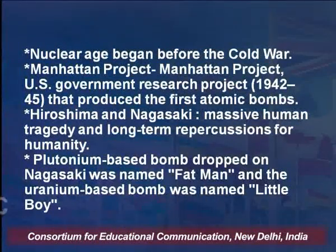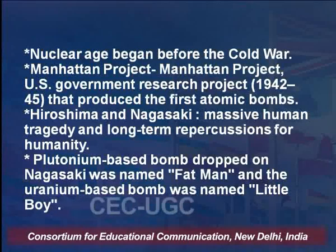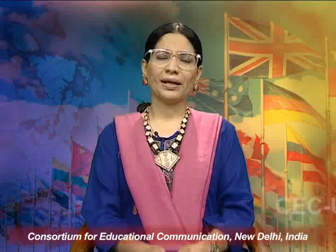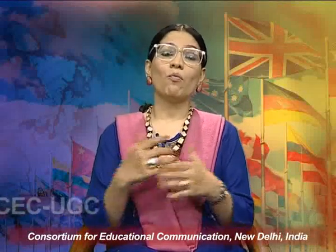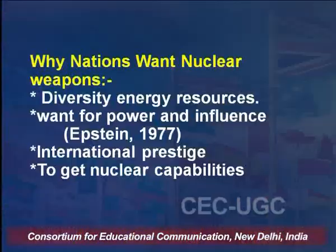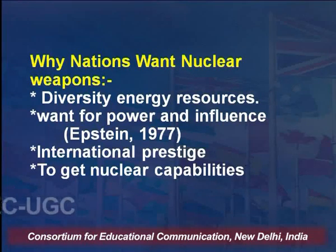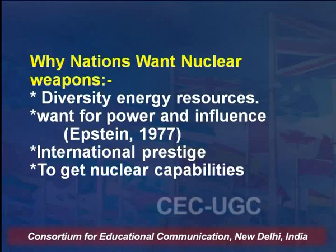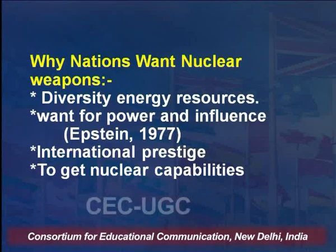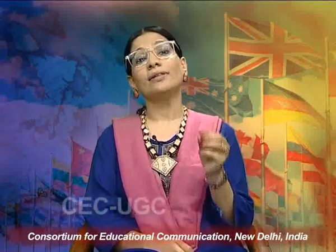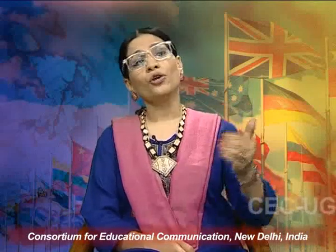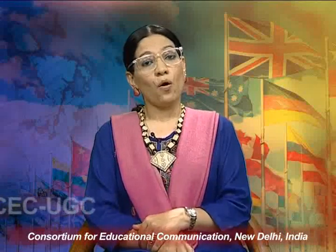The plutonium-based bomb dropped at Nagasaki was named Fat Man, and the uranium-based bomb was named Little Boy. This brings us to why nations want nuclear weapons. According to Epstein, a want for power and influence is one of the driving factors. Nuclear energy is also a clean source of energy and a way to diversify energy resources. International prestige and the quest to gain nuclear capabilities are other related aspects.